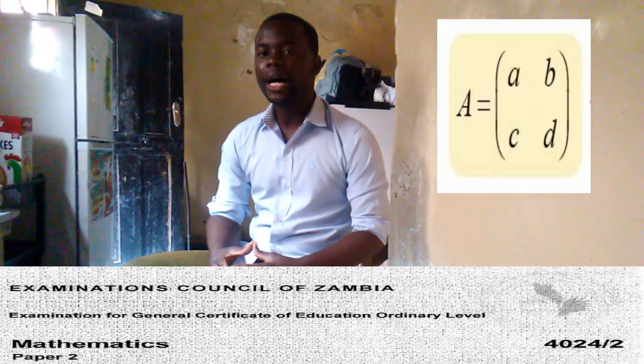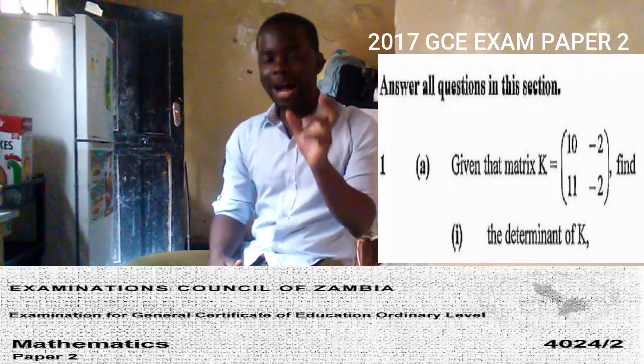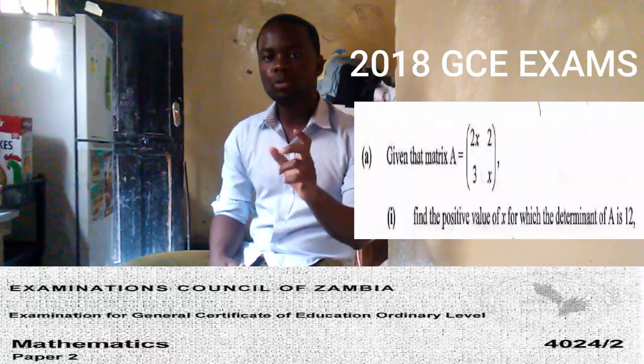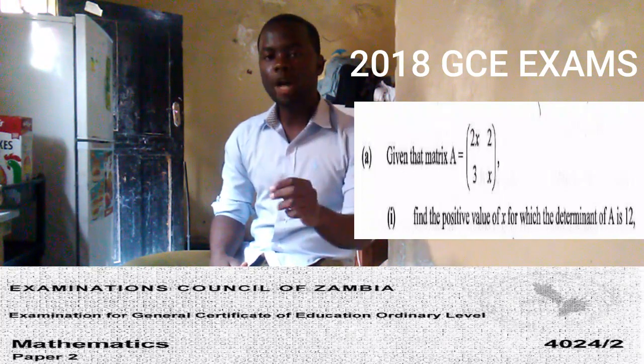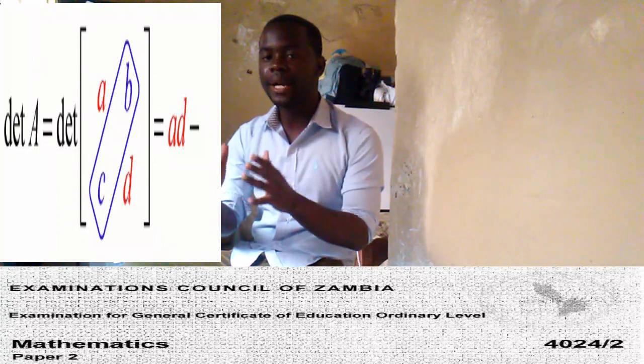Did you know that ECZ brings the same concept of matrices under mathematics paper 2? Yes, that is the concept of the determinant and the inverse. Under the concept of a determinant, you'll be either asked to calculate the determinant of a matrix, or a matrix will be given to you, then you'll be required to calculate the value of a certain variable in a matrix. The formula for a determinant is: determinant is equal to major diagonal minus minor diagonal. It's a very simple concept that you must know, and you'll get two marks from that.